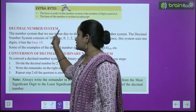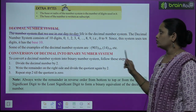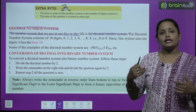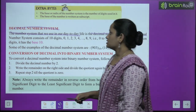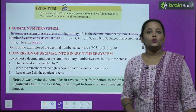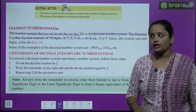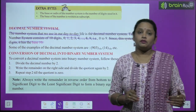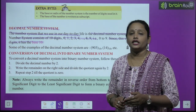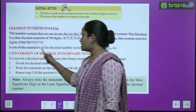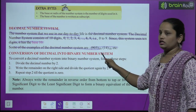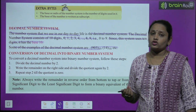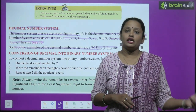Now let's read about the decimal number system. The number system that we use in our daily life is the decimal number system. The decimal number system consists of 10 digits — 0 to 9. Since this system uses 10 digits, it has base 10. Some examples of the decimal number system are 903 base 10, 14 base 10, and so on. When we solve a decimal number system question, we use base 10, just as the binary system uses base 2.